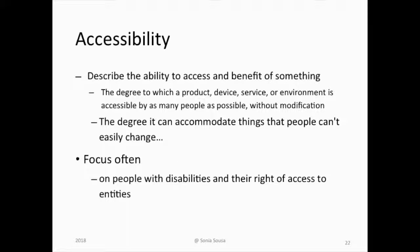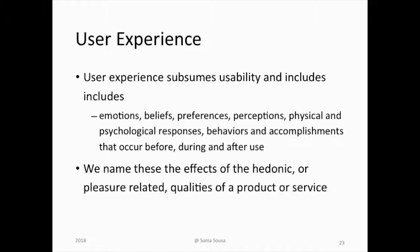Accessibility is another important dimension to measure when evaluating a high fidelity prototype or a product in the market. We need to know if everyone can access our product or not, as there are degrees of accessibility. There are predefined questionnaires and predefined heuristics inspection methods that you can use to measure accessibility. User experience subsumes usability and includes additional feelings like emotions, beliefs, preference, and perceptions of the user.